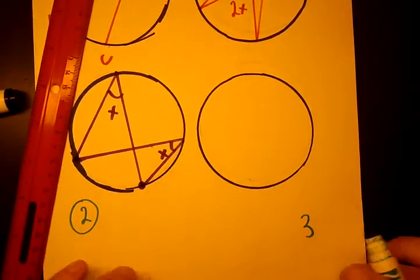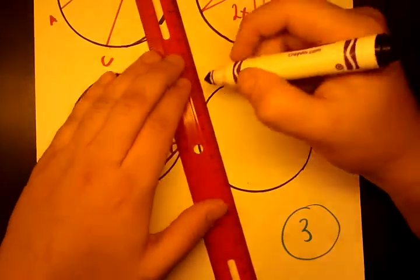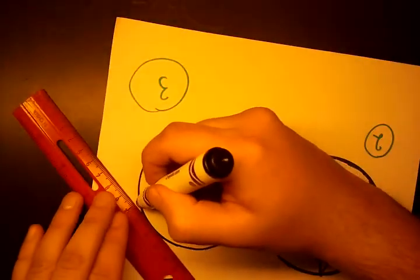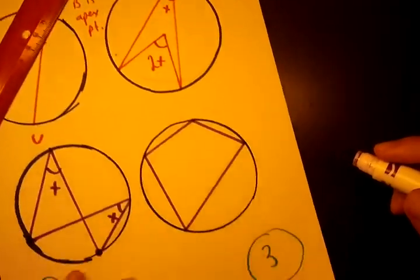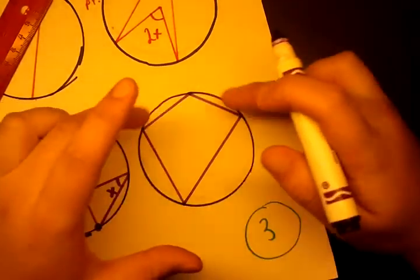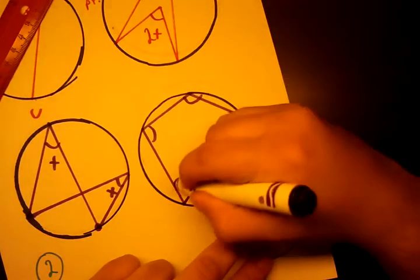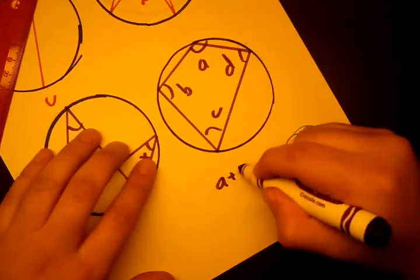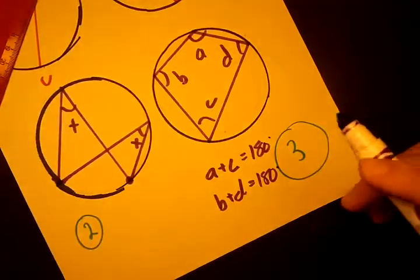Theorem number 3 is about cyclic quadrilaterals. If we draw any quadrilateral inside the circle — it doesn't have to be a square or rectangle, just any quadrilateral — we already know the sum of all angles in a quadrilateral is 360. But this theorem says that opposite angles sum to 180. We'll label them A, B, C, and D. Angle A plus C equals 180 degrees, and angle B plus D equals 180 degrees. That's theorem number 3.